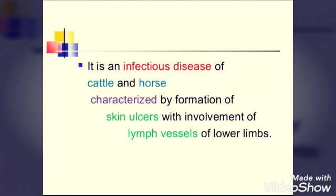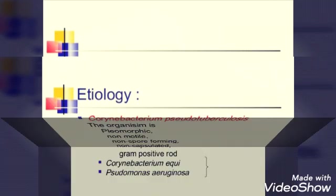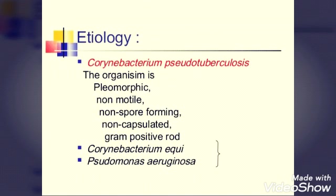This disease is mainly due to infections transmitted from cattle and horse, caused by bacterial infection. In etiology, the causative agents are Corynebacterium pseudotuberculosis, then Corynebacterium equi, and then Pseudomonas aeruginosa. These three are the bacteria that cause lymphangitis, and they are transmitted from animals like horse, cow, goat, and so on.